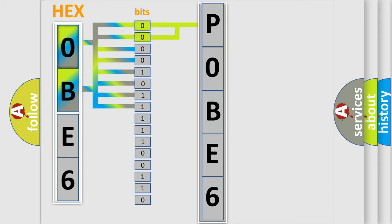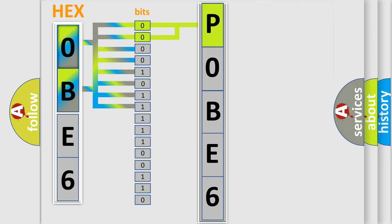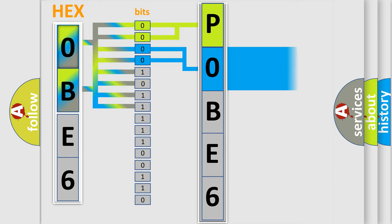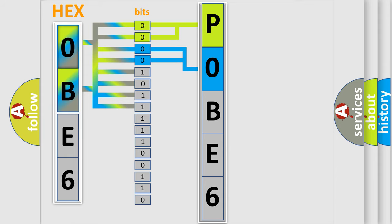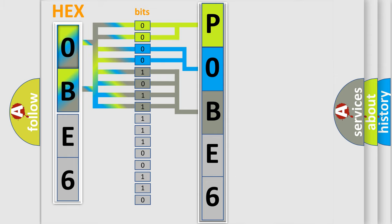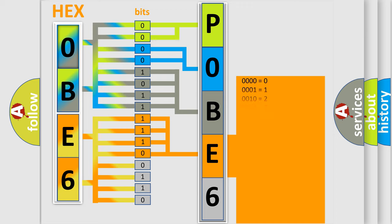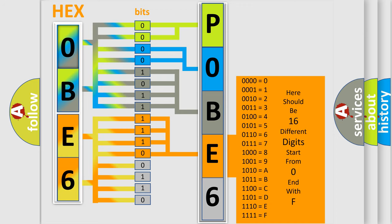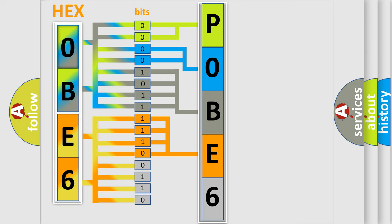By combining the first two bits, the basic character of the error code is expressed. The next two bits determine the second character. The last bits of the first byte define the third character of the code. The second byte is composed of a combination of eight bits: the first four bits determine the fourth character, and the combination of the last four bits defines the fifth character. A single byte conceals 256 possible combinations.